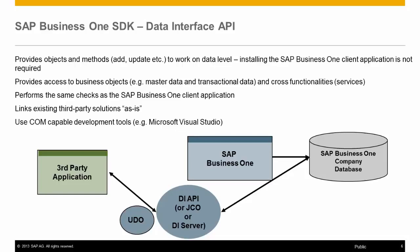Available business objects consist of master data and transactional data types, and allow for add, update, and delete operations. The same business logic used for data validation by SAP Business One is also utilized by the DI API.